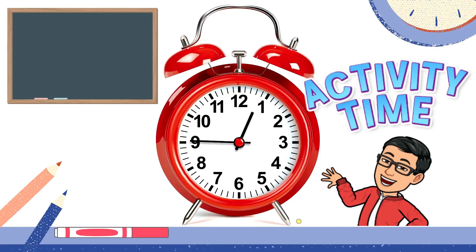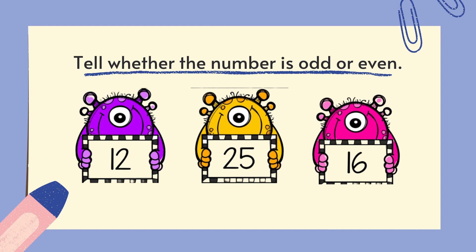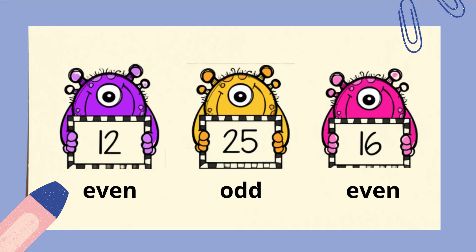It's activity time! Are you ready? Tell whether the number is odd or even. In our first set of numbers, we have twelve, twenty-five, and sixteen. Let's check your answers. Twelve is even. Twenty-five is odd. And sixteen is even. Did you get it right? Fantastic!